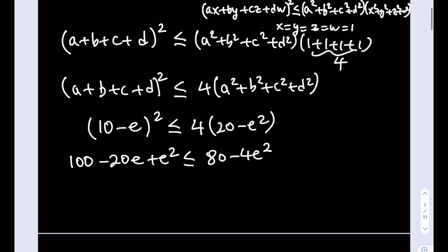All right. Let's go ahead and put everything on the same side. 5e squared minus 20e plus 20 is less than or equal to zero. I can just go ahead and divide both sides by five. And that's going to give me e squared minus 4e plus 4 is less than or equal to zero.